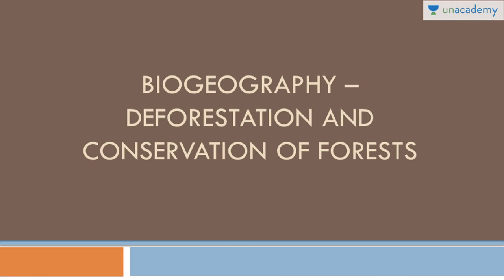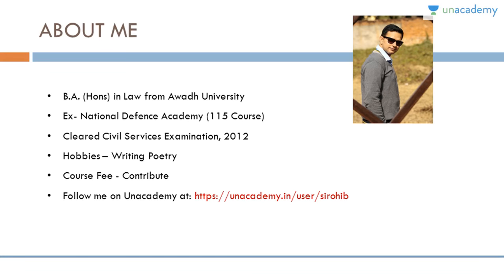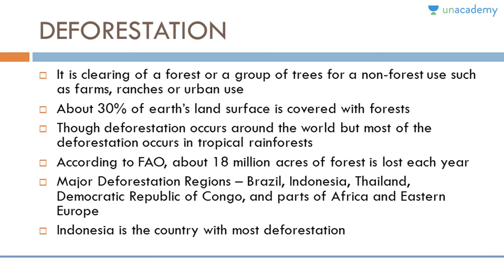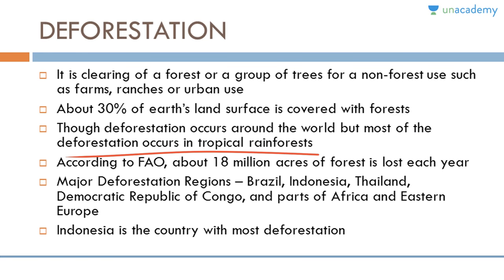Deforestation is the clearing of a forest or group of trees for non-forest use such as farms, ranches, or urban use. About 30 percent of the world's land surface is covered with forest, and though deforestation occurs globally, most occurs in tropical rainforests. According to the Food and Agriculture Organization, about 18 million acres of forest are lost every year. Major deforestation regions include Brazil, Indonesia, Thailand, the Democratic Republic of Congo, parts of Africa, and Eastern Europe. Indonesia is the country with the most deforestation.